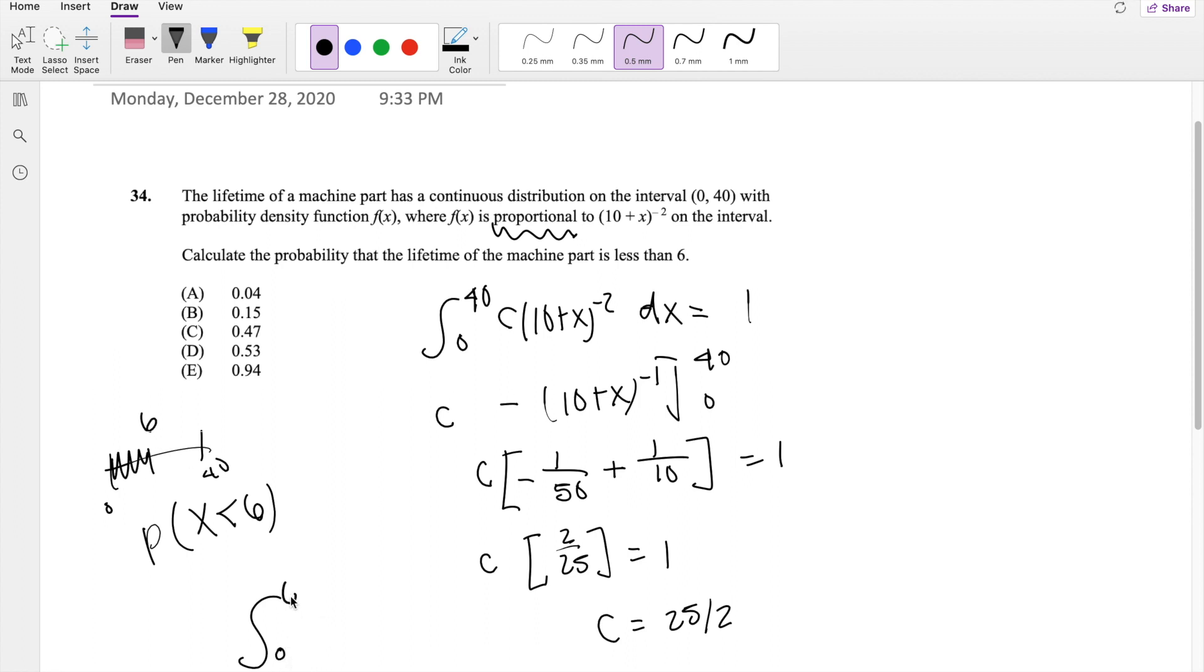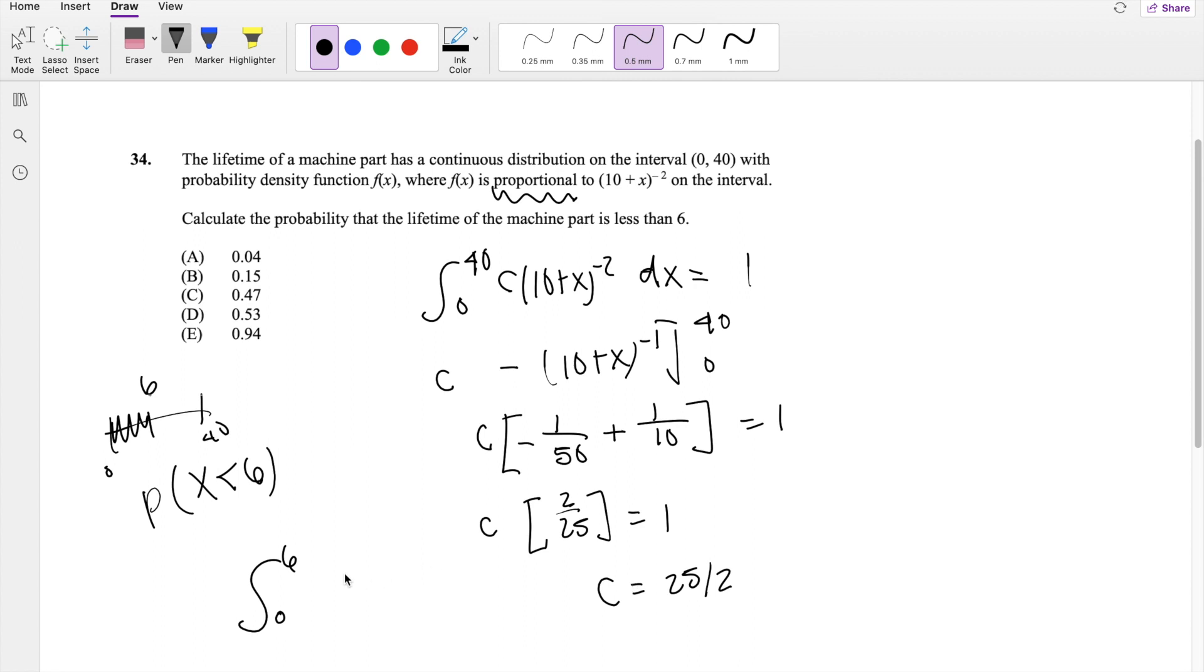So we're integrating from 0 to 6 of this thing right here. 25 over 2, 10 plus x, negative 2, dx.